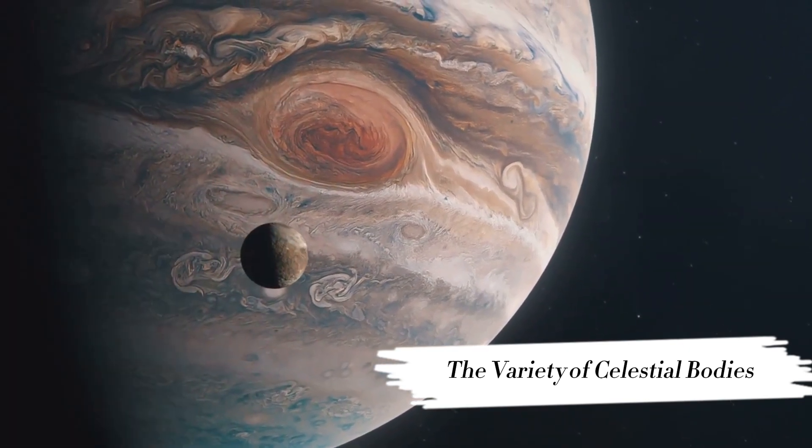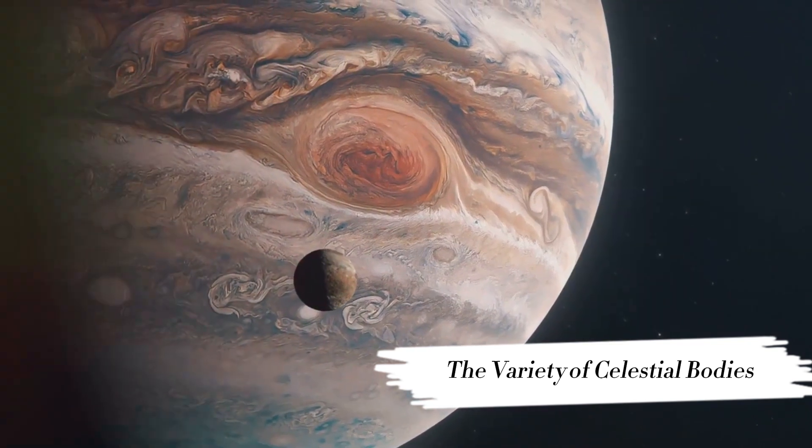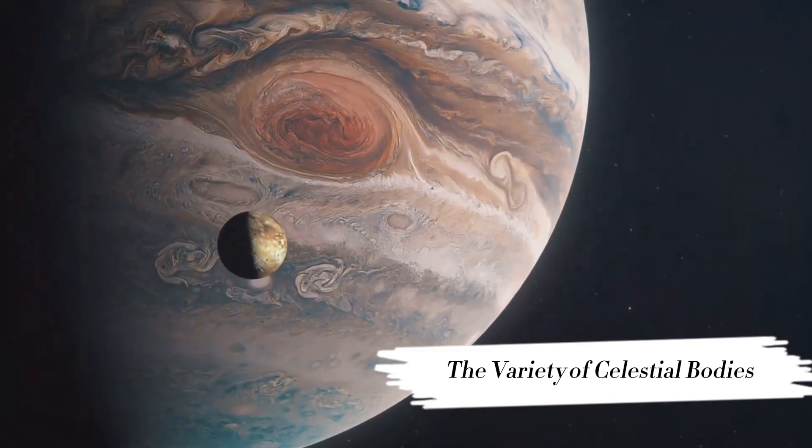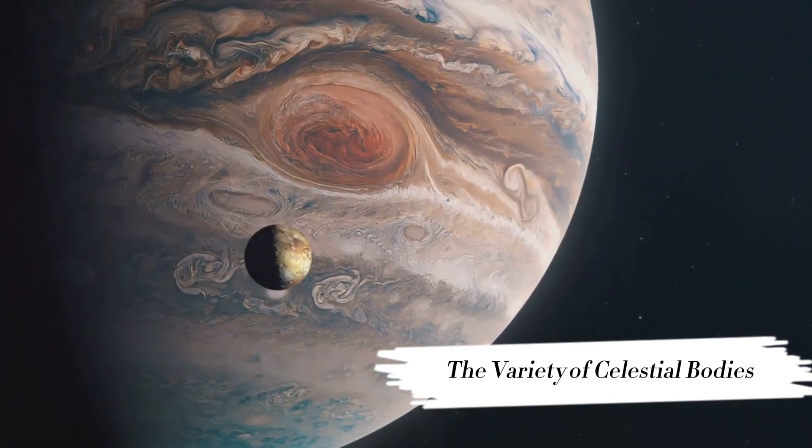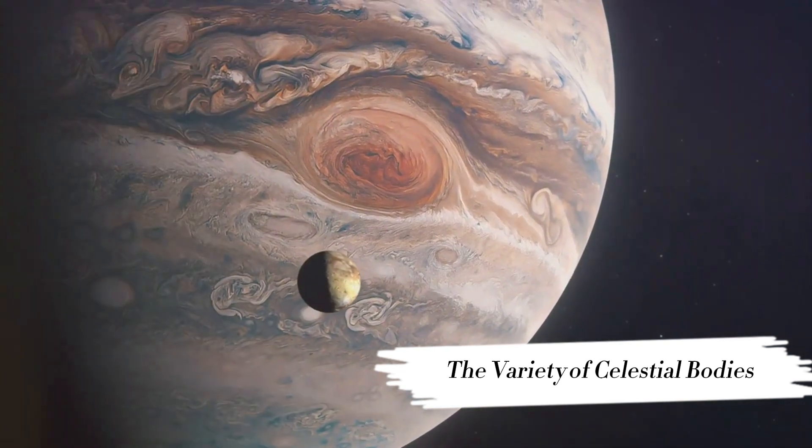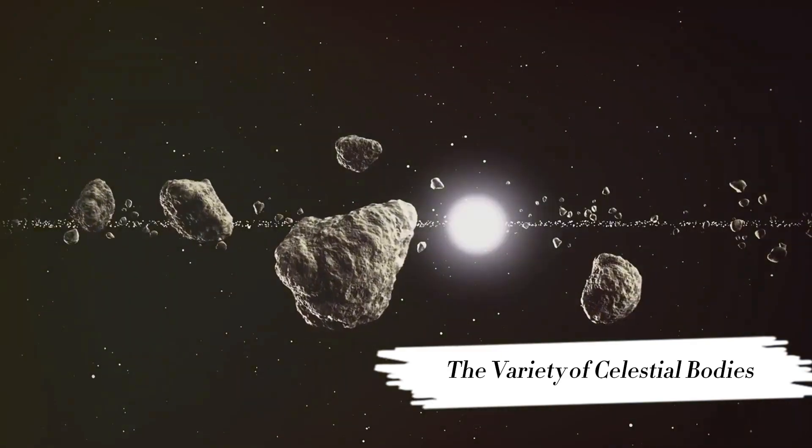Speaking of galaxies, these vast networks of stars, gas, dust, and dark matter are the universe's cities. Some, like our Milky Way, are spiral-shaped, with arms curling out from a central bulge. Others are elliptical, more round than flat, while still others are irregular with no distinct shape. Each galaxy carries its own unique tale of cosmic evolution.